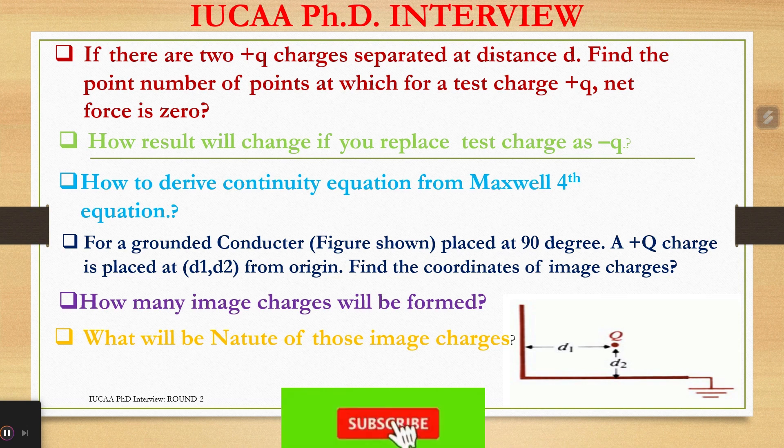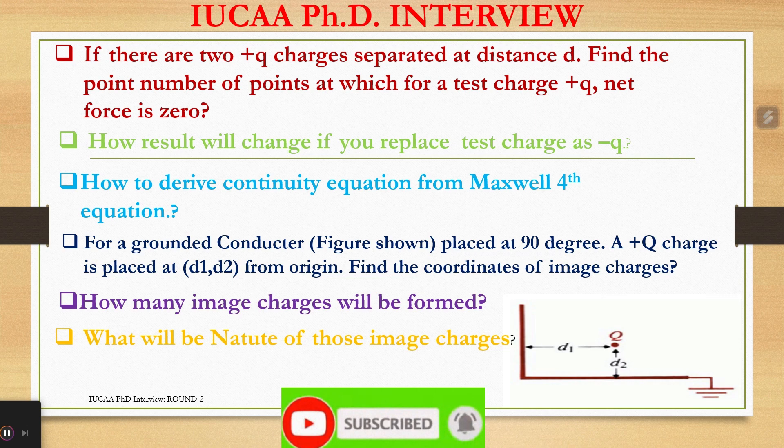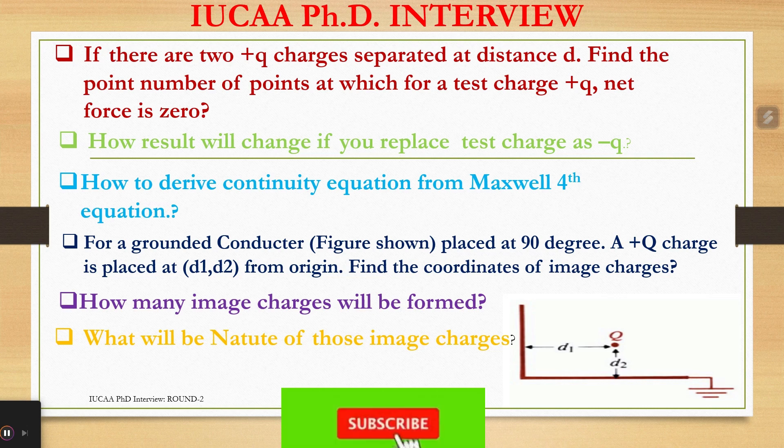For a grounded conductor placed at 90 degrees, a plus Q charge is placed at d1, d2 from origin. Find the coordinates of image charges. How many image charges will be formed? What will be the nature of those image charges?